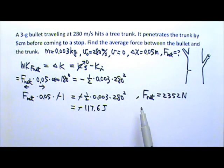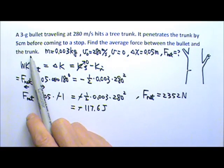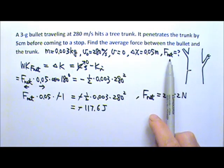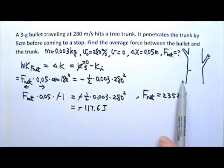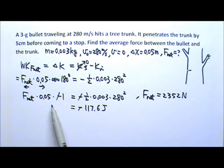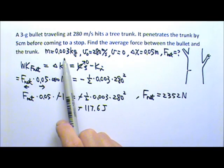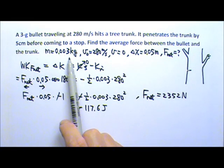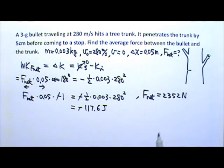Now in this problem, the force we're asked to find is the average force between the bullet and the trunk, which is not exactly the net force, because the net force on the bullet includes both mg and the force from the tree trunk. However, I did not bother to take the weight of the bullet into consideration, because the mass is 0.003 kg, so the weight is only 0.03 N — very small compared to the force from the tree trunk. So mg is negligible here.